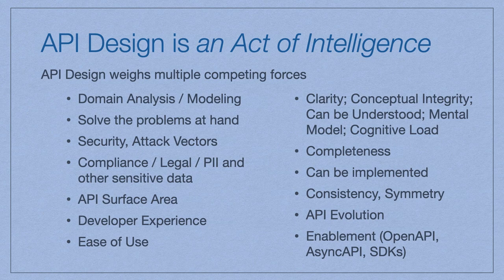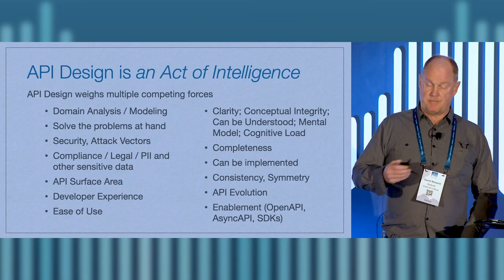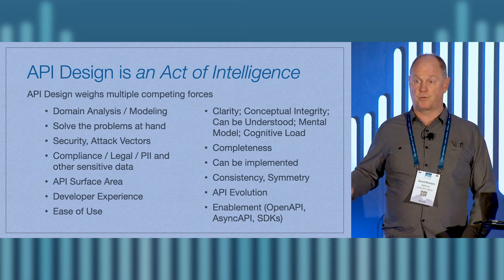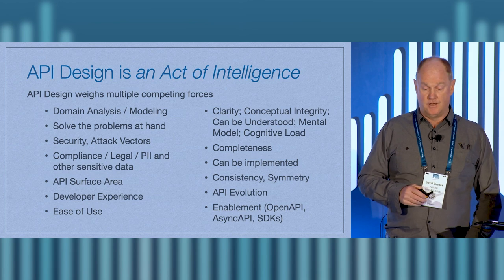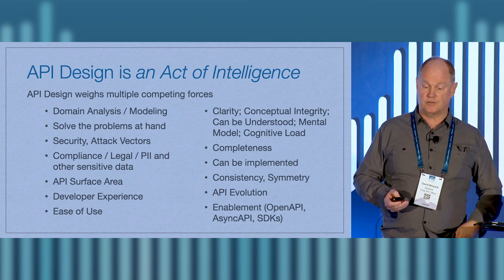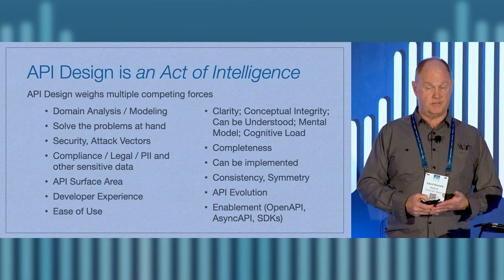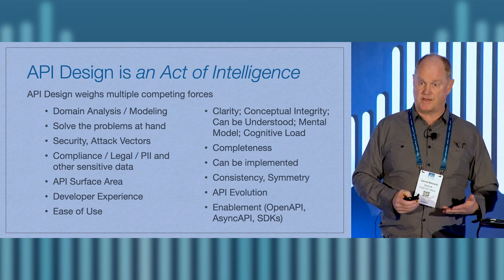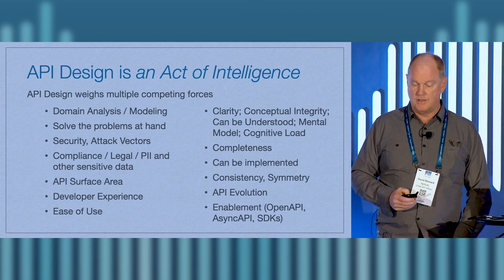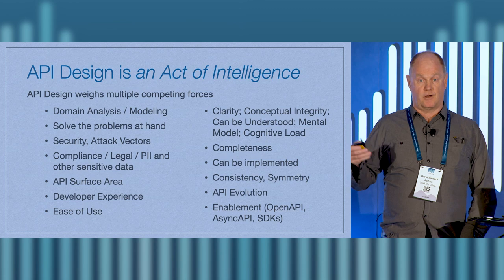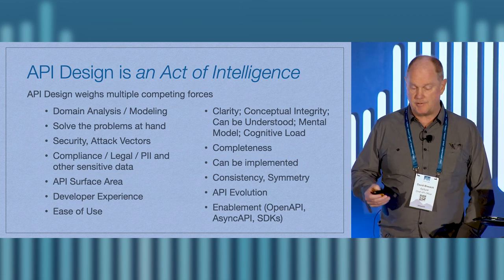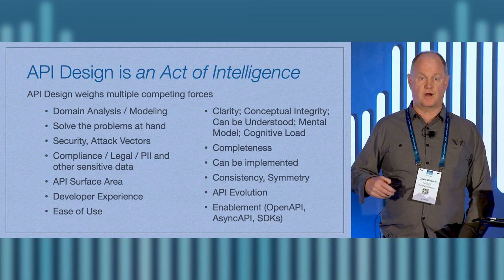I really want to classify API design as an active intelligence. When we're doing API design, we're weighing lots of different competing forces. We have to do requirements analysis, understand the domain model, and work with the product team so the API fits the need. We also have to consider security and attack vectors. I work in the banking industry, so I'm very concerned about regulatory compliance around APIs — we're doing APIs that deal with people's money and bank accounts. Compliance is top of mind. There are also legal and PII aspects, and we've heard about security leaks in APIs recently.